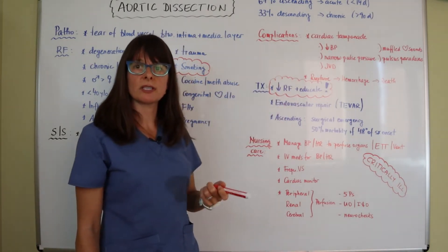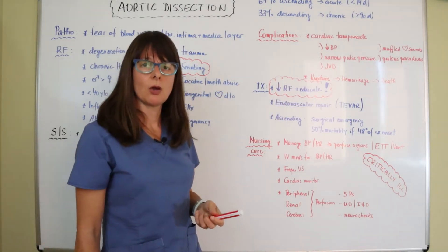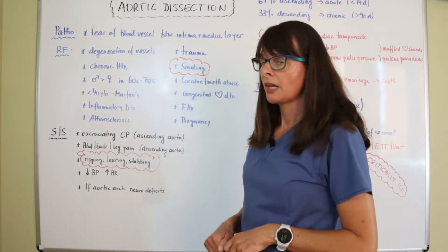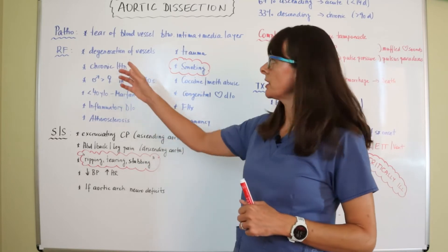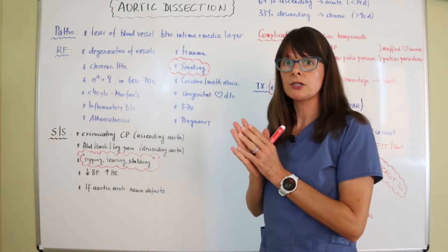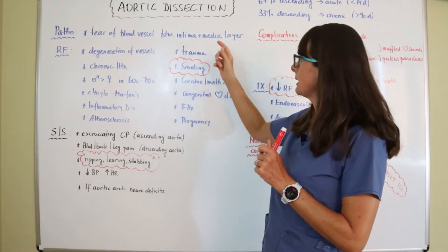Now, neither one is good, but of course the acute has more risk for rupturing than the chronic one or the descending one. And so what really happens here, there is a tear of the blood vessel between the layers of the intima and the media layer.